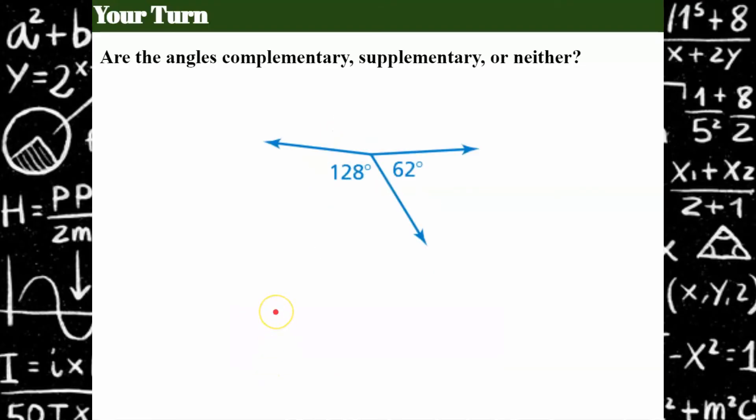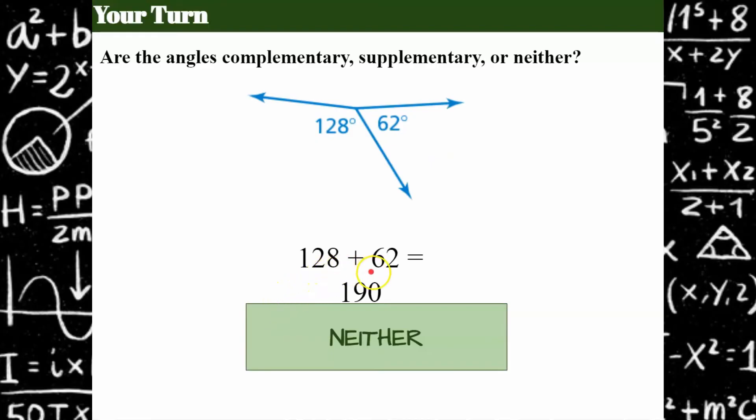One more. So when you add these together, 128 plus 62 is 190. So this is neither. Careful. It's not 180. It's 190.